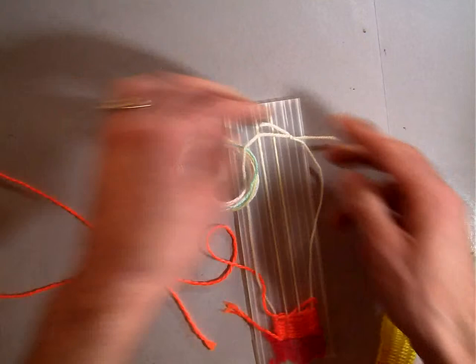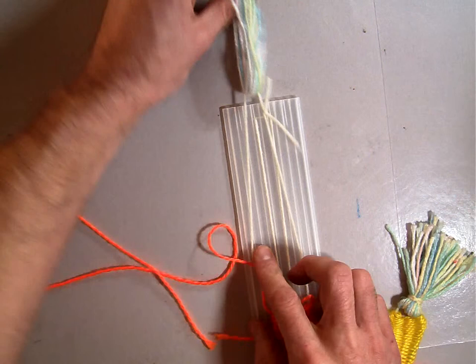Pull on both sides so it's nice and tight. If you want to, you can trim just a little bit off there. Now if you pull this loop, it's kind of stuck on there. This is going to be our tassel.